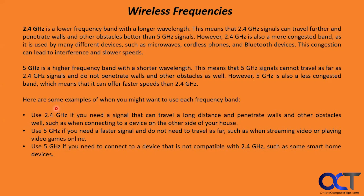First, the 2.4 gigahertz band. This is a lower frequency band with a longer wavelength, which means signals can travel further and penetrate walls and other obstacles better than 5 gigahertz signals. However, the 2.4 gigahertz band is more congested — it's used by many different devices such as microwaves, cordless phones, and Bluetooth devices. This congestion can lead to interference and slower speeds.